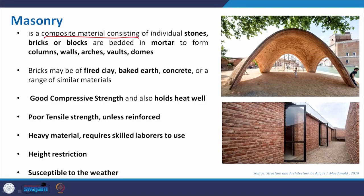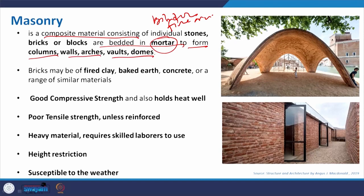Masonry is basically a composite material consisting of brick or brick-like blocks — which may be mud, sand, fired brick, or stone — bedded in mortar. Mortar is a mixture of a binder and fine aggregate; for cement mortar it is cement and sand with water, and for lime mortar, lime is used instead of cement. Masonry was extensively used in forming columns, walls, arches, and domes in Romanesque and other historical architecture.